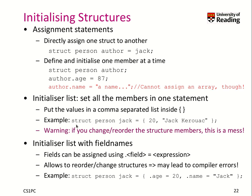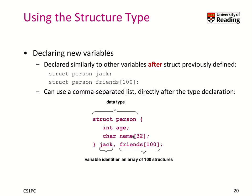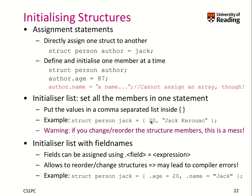There are other ways of initializing data structures. One is the initializer list. When we create a variable Jack, we can use curly brackets notation. We have to use the exact order of the elements we want to initialize — so 20 and then our string. Looking at the declaration, we had first age and name, so 20 becomes the age and the string becomes the name. For very big structures this is cumbersome, so you can also use the initializer list with field names: in the curly brackets write dot age equals 20 and dot name equals Jack, and the compiler will reorganize it accordingly.